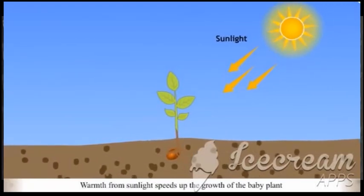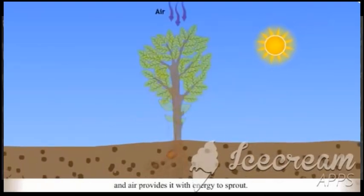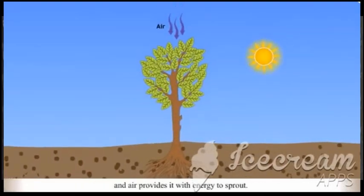Warmth from sunlight speeds up the growth of the baby plant, and air provides it with energy to sprout.